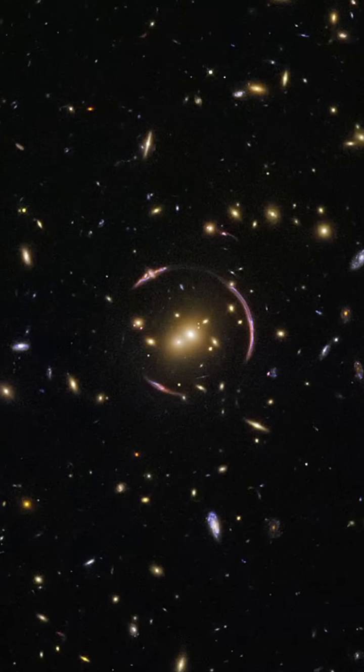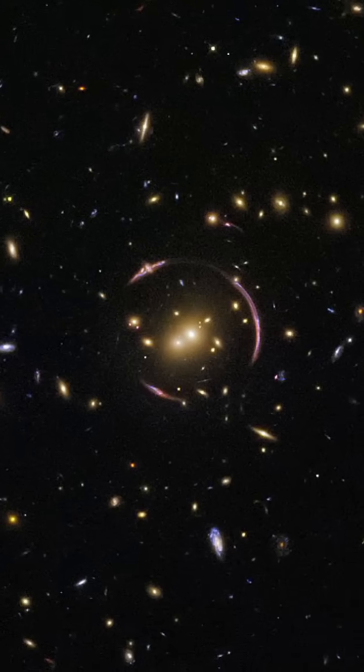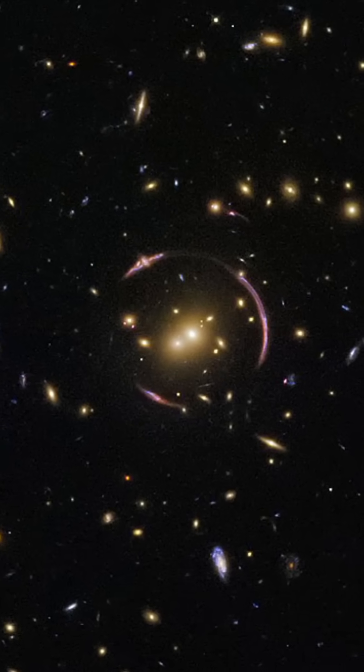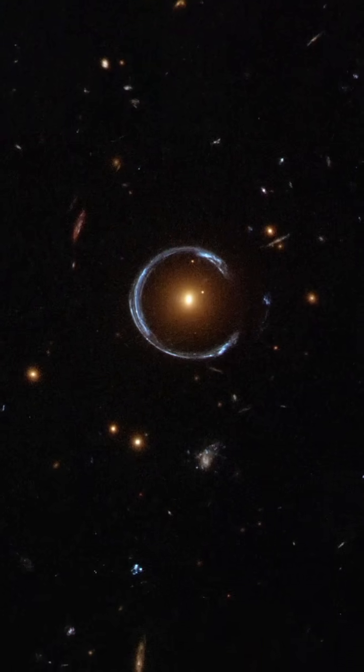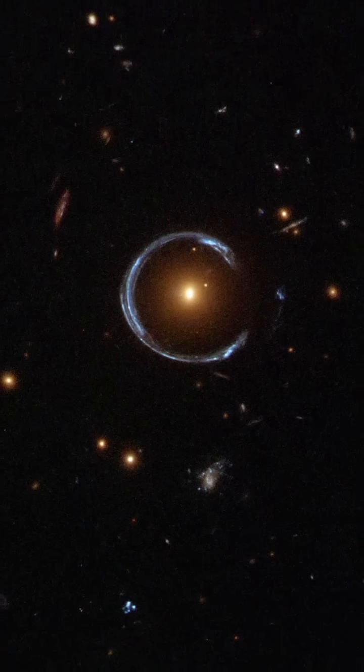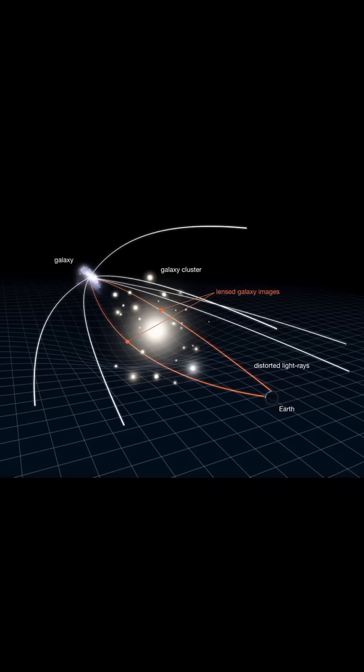Hidden within this breathtaking Einstein ring lies one of the most massive black holes ever detected. Meet LRG 3757, a galaxy so massive that it bends and magnifies light from another galaxy behind it.